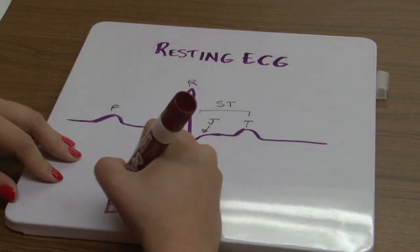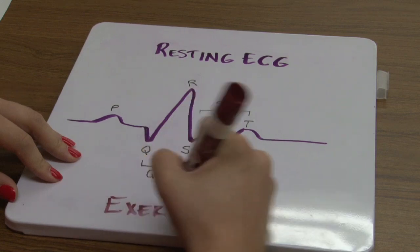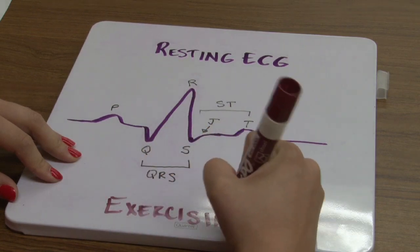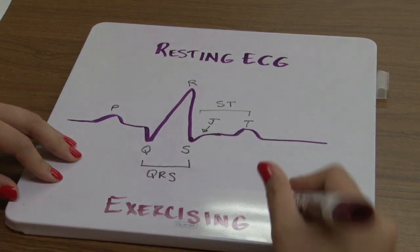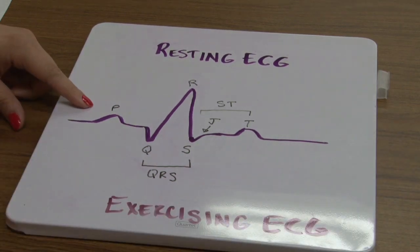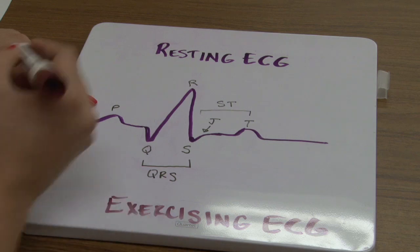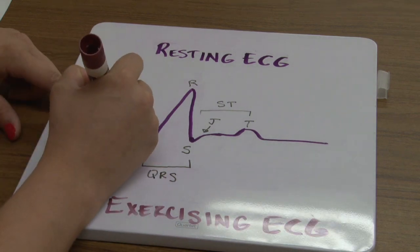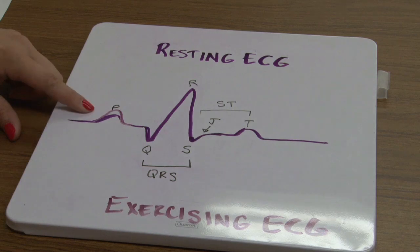Now, some changes that we would see during an exercising ECG. If we look first at the P wave, this is the atrial depolarization, or the electrical conduction from the SA node to the AV node across the atria. Here we would only see minor changes. If anything, we would see a small increase in the P wave.